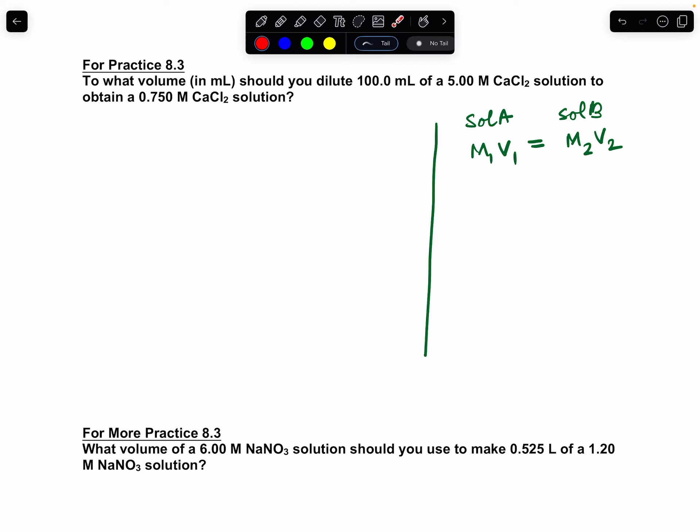The question is: to what volume in milliliters should you dilute 100 mL of 5.00 M CaCl2 solution to obtain a 0.750 M CaCl2 solution?